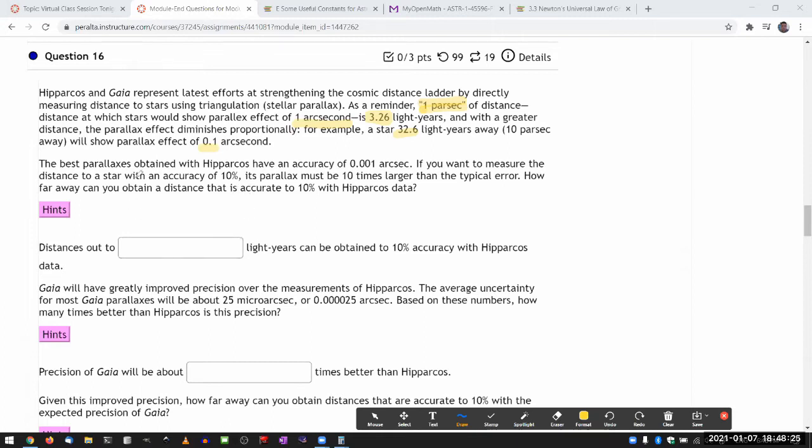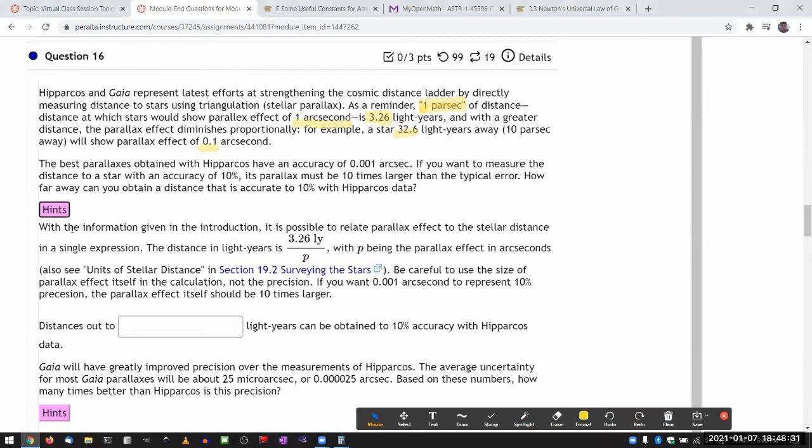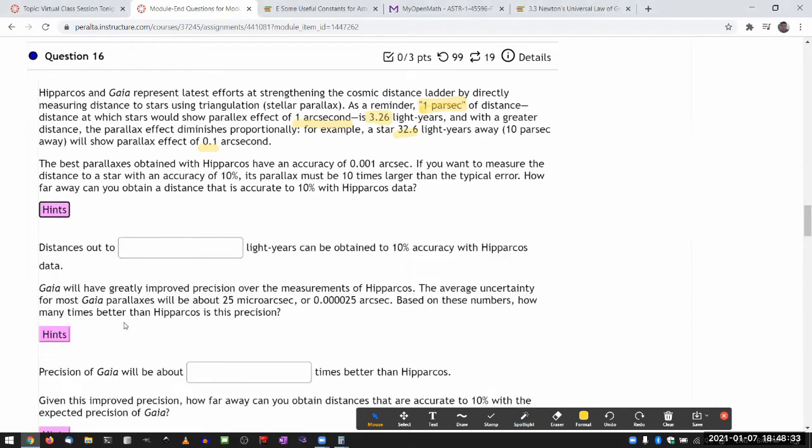So with that knowledge, we can do the rest of the calculations here. If I unfold a hint, the hint will basically say the same thing I'm saying out loud. So I won't open the hint, but you should open the hint and read it. So it says the best parallaxes obtained with Hipparchus have an accuracy of milli arc second or 0.001 arc second. If you want to measure the distance to a star with an accuracy of 10%, the parallax must be 10 times larger than the typical error. How far away can you obtain a distance that is accurate to 10% with the Hipparchus data? It feels like the question gave us all the information.